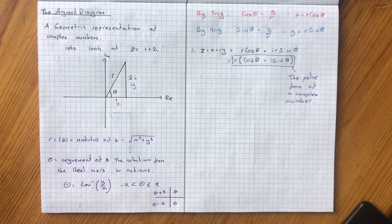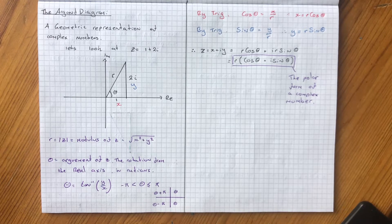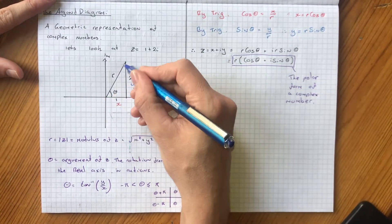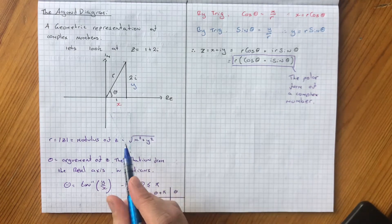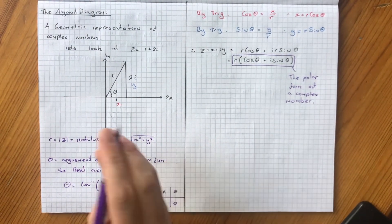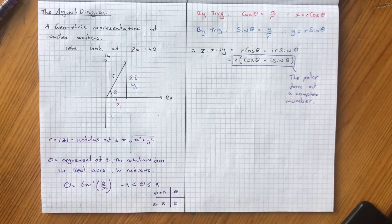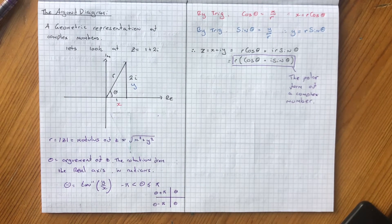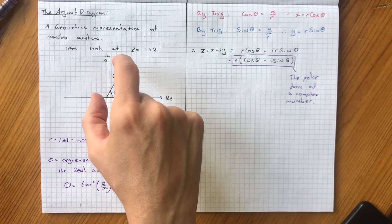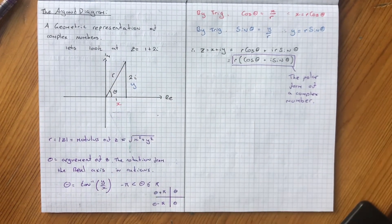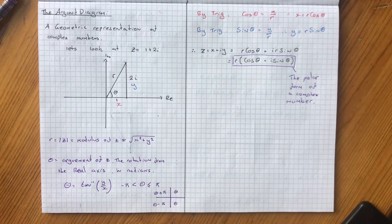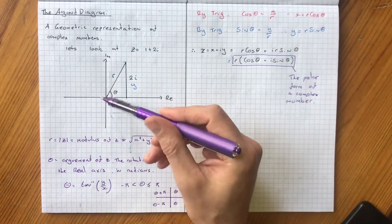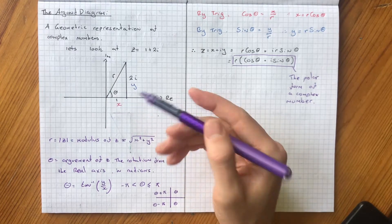From this we can work out two very important aspects of a complex number. Firstly, r, which is equal to the modulus of z — basically the size of this line — which we can calculate by Pythagoras: it's going to be the square root of the real component squared plus the imaginary component squared. Another aspect we can work out is the angle made by this line, which we call the argument of z — the rotation from the real axis in radians — and using simple trigonometry we can see that theta equals tan to the minus 1 of y over x.